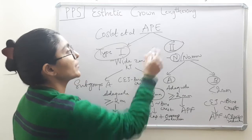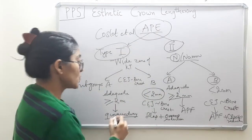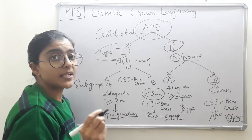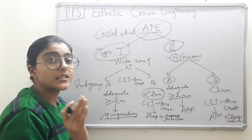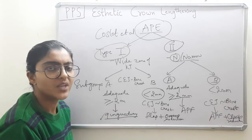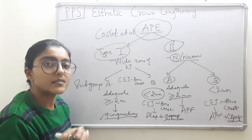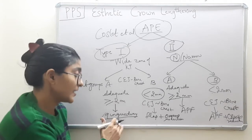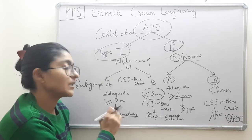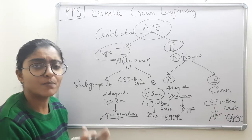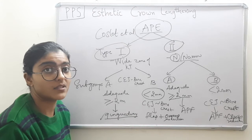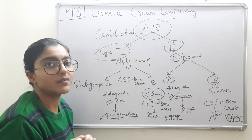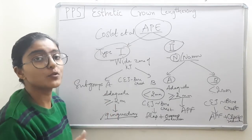This is a clear-cut explanation of the treatment of altered passive eruption. Gingivectomy is performed as per its standard rules — most commonly external bevel gingivectomy. However, in dark-skinned individuals whose gingiva is more heavily pigmented, external bevel gingivectomy will result in pink gums post-operatively. In such cases, internal bevel gingivectomy is preferred to avoid post-surgical change in pigmentation.